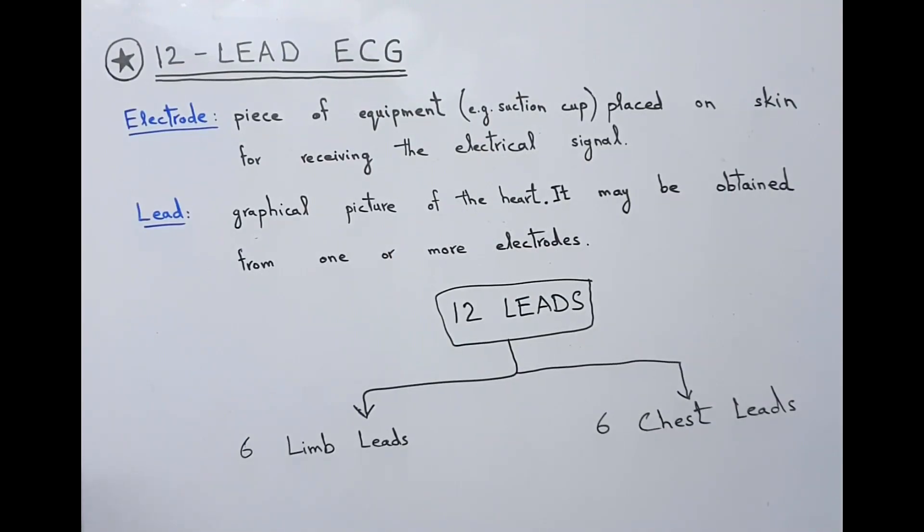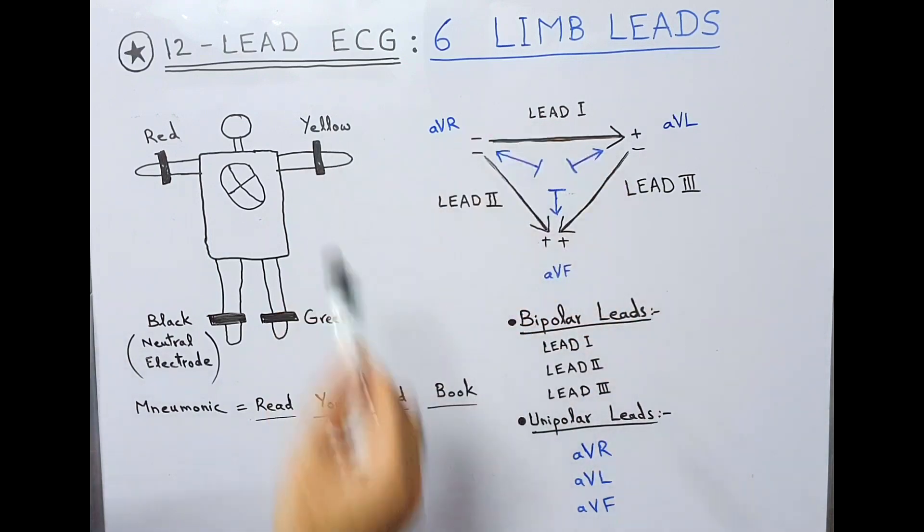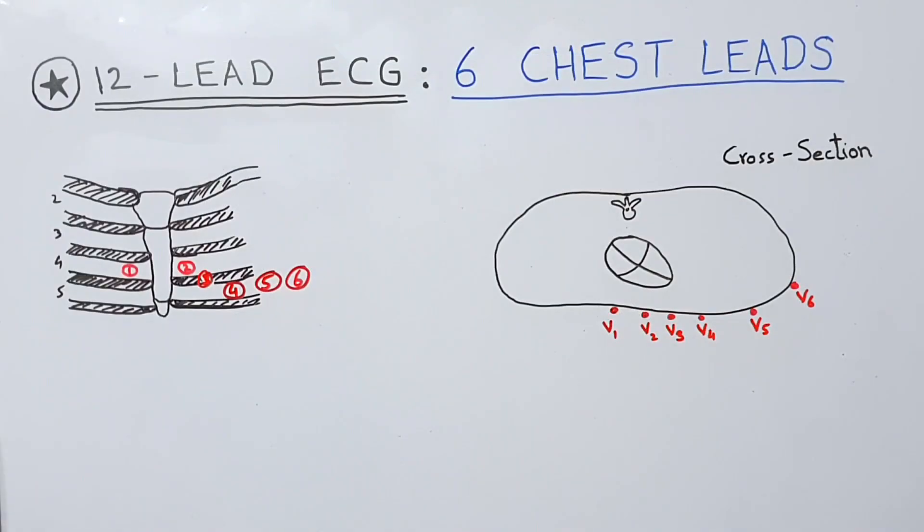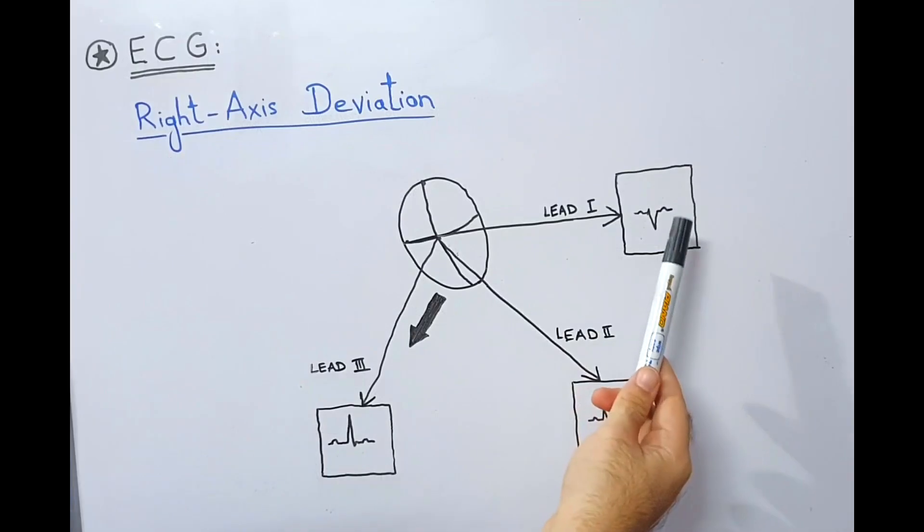The difference between an electrode and a lead, the concept of 12-lead ECG with 6 limb leads and 6 chest leads, cardiac axis and right and left axis deviations.